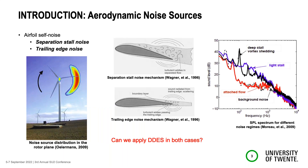Why are we interested? We are interested in this type of noise mainly for wind energy applications. Especially in the root region, we have massive stall and high angles of attack, and that contributes to stall noise. We know that stall noise is a bit higher than trailing edge noise.